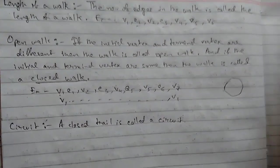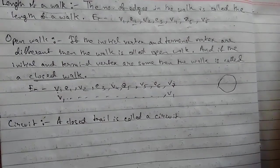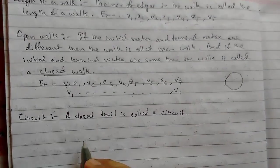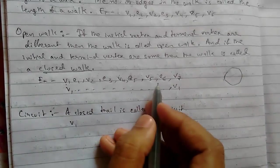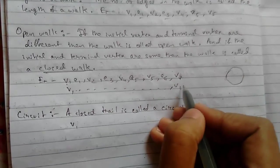And we know what trail is: a trail is a walk in which no edge is repeated. So no edge is repeated, this is a circuit.